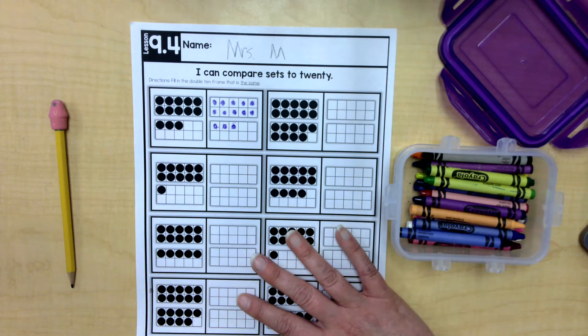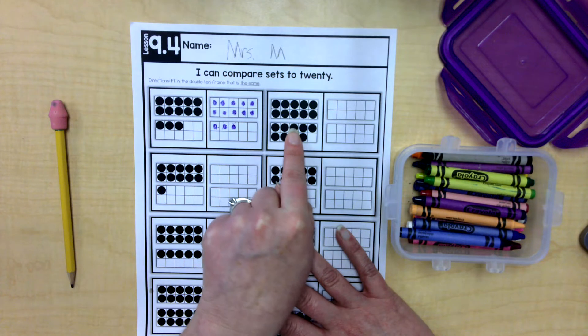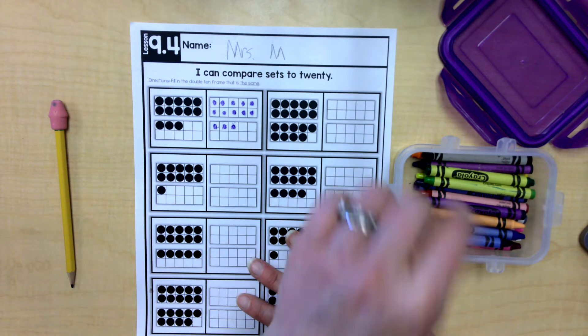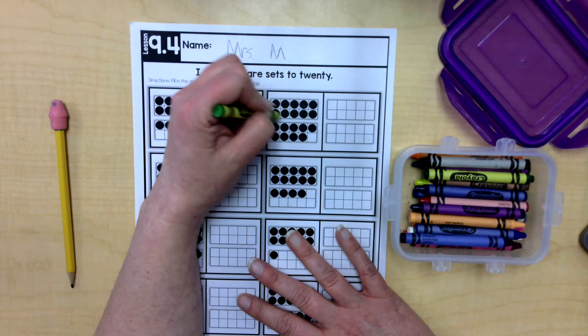All right. Next, I need to make these double 10 frames match these double 10 frames. I'm going to pick a different color. How about green? Well, I know this one already has 10.